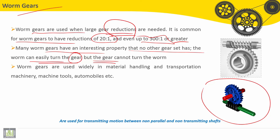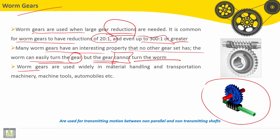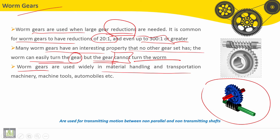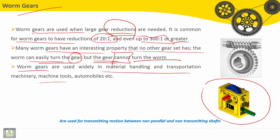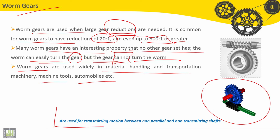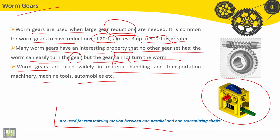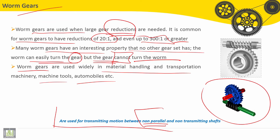But the gear cannot turn the worm. Worm gears are used widely in material handling and transportation machinery, machine tools, automobiles, etc. They are used for transmitting motion between non-parallel and non-intersecting shafts.